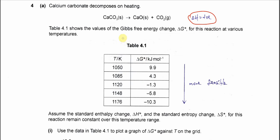Table 4.1 shows the values of the Gibbs energy with the temperatures. As you can see, when temperature increases from 1050 to 1176, the Gibbs energy becomes more negative — from 9.9 to negative 10.3. This tells us that the reaction is more feasible when the temperature increases.